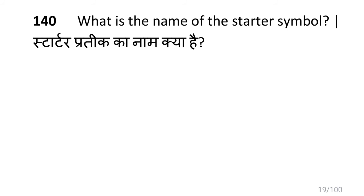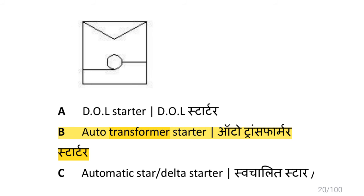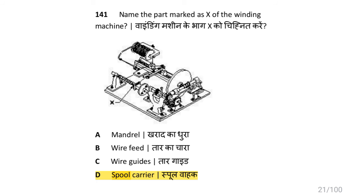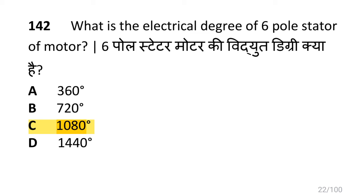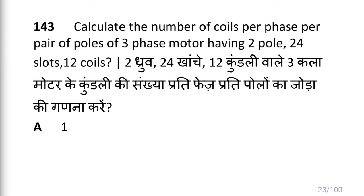The starter symbol shown is the auto transformer starter. The part marked as X of the winding machine is the spool carrier. The electrical degree of a six pole stator of a motor is 1080 degrees.